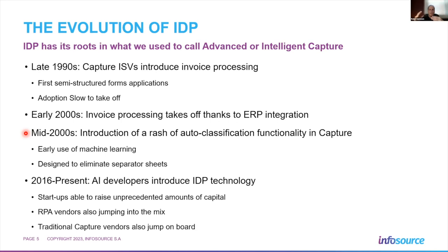Around 2016-2017 we really started to see a trend of people with roots in AI entering the market. More cloud computing power enabled running AI algorithms, more were made available through open source, and these groups were looking for a place to apply their AI technology. They saw the capture market as an opportunity — a lot of unstructured and semi-structured forms not touched by current capture applications — so it became one of the first areas where AI really hit the road.